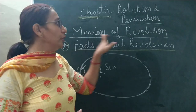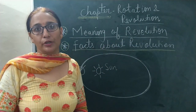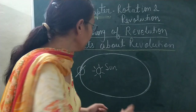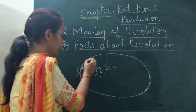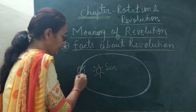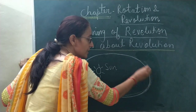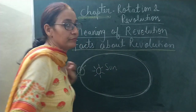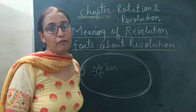So first I am going to explain you what is revolution — what is the meaning of revolution? Revolution means when the earth moves around the sun. That is known as revolution.